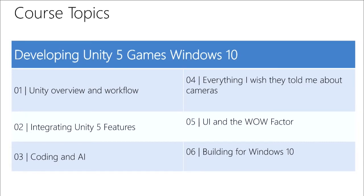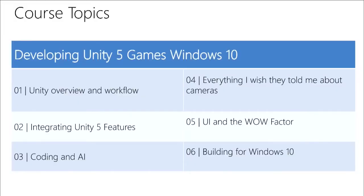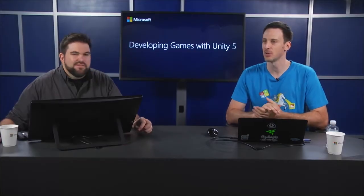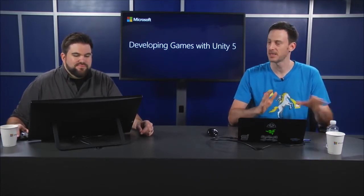In Module 3 we're going to go over some coding and a little bit of AI, which is a funny term because it's not really intelligence in games. Module 4 is everything I wish they told me about cameras — hopefully you'll pick up a couple of tricks on what you can do with cameras. Module 5 is UI — overlaying HUD elements and the wow factor, doing cool stuff to make the game stand out. Finally, Module 6, we're going to be talking about building for Windows 10. Unity's done some cool work on the tooling there, which is currently in beta.